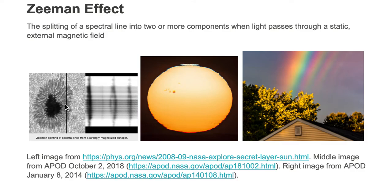This is what we mean by the Zeeman effect. It was discovered by Dutch physicist Zeeman in the late 1800s and earned him a Nobel Prize. It is an effect that can determine the strength of the external magnetic field by measuring the amount of shift in the split from the unmagnetized spectral line. A very strong magnetic field produces a very wide split, while a weaker magnetic field produces only a tiny shift in the split.